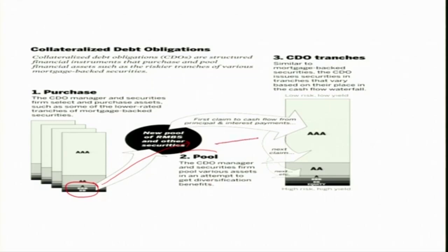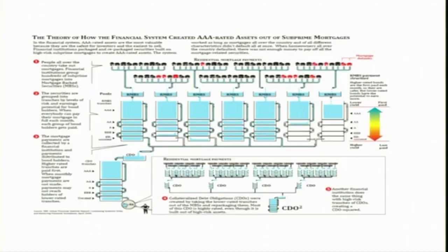These CDOs are further made into triple-A and double-A kinds of products — CDO tranches have been created. This is the full illustration of how the financial system created a triple-A rated asset out of subprime mortgages.